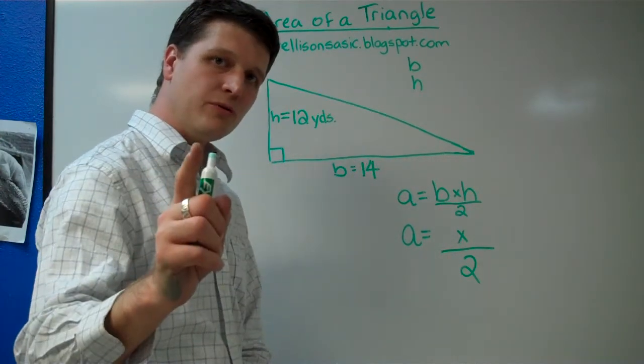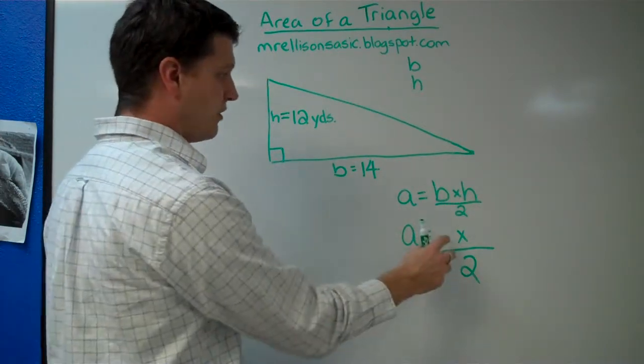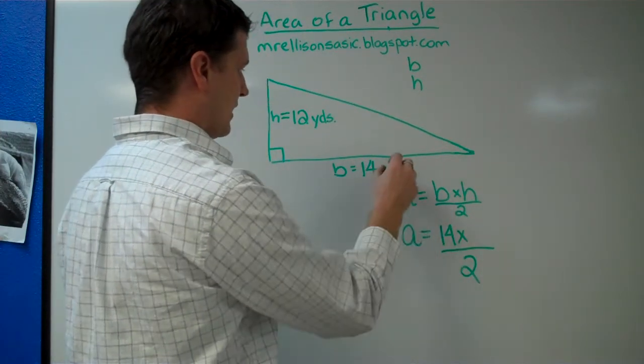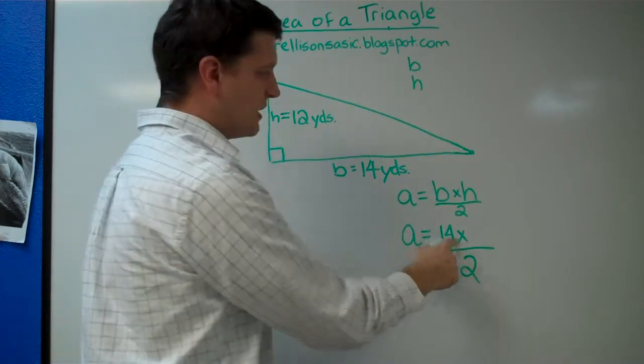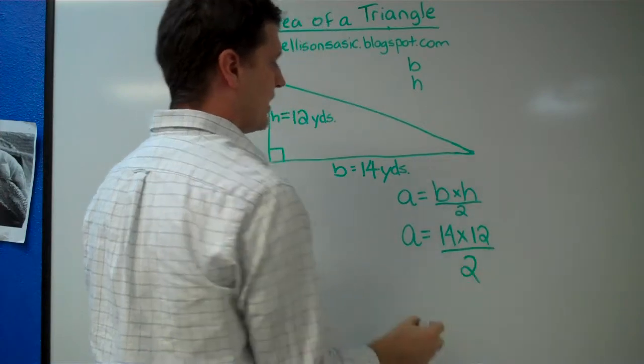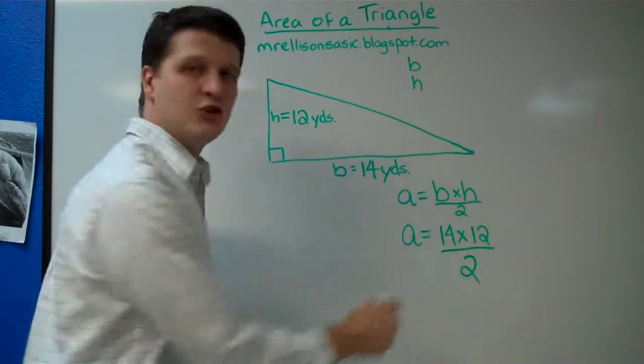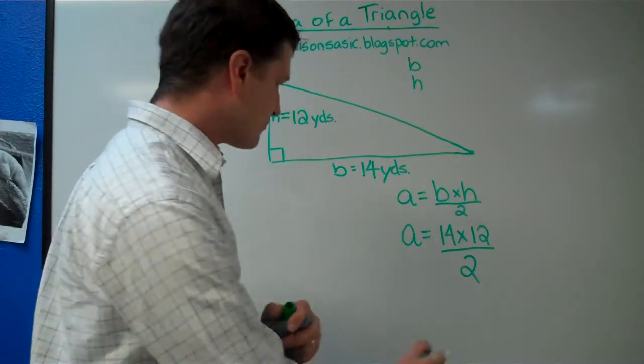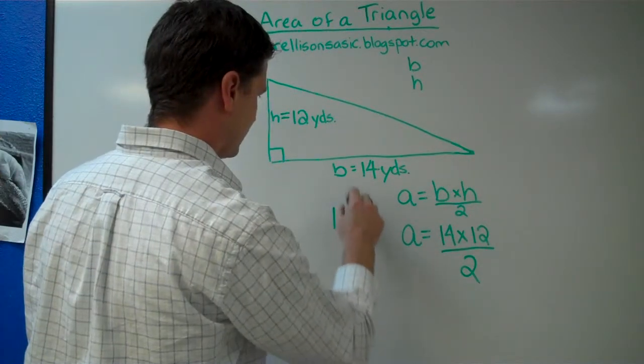Now, what we're going to do is we're going to find our base, which is 14. And we're going to remember that it's in yards, so it's 14 yards times whatever our height is, which is 12 yards. And we're going to take those two numbers and multiply them, and divide by 2. Now, so let's multiply our 14 times our 12.